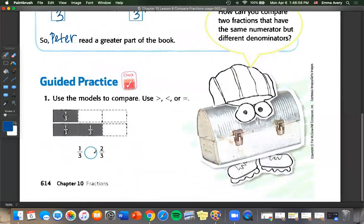Number one, use the model to compare. So which is bigger? One third or two thirds? We know it's two thirds because there are two thirds pieces. So we know two thirds is bigger than one third.